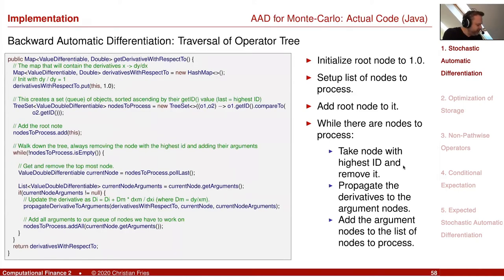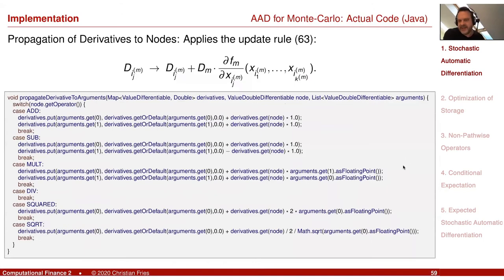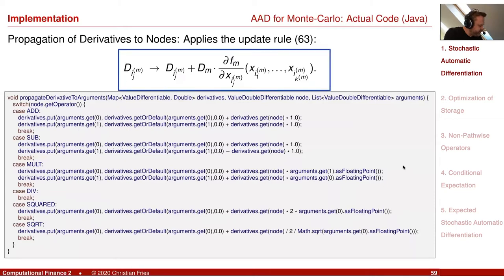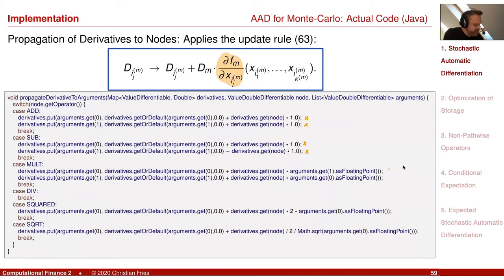We built the set quite efficiently by just adding the root node and then adding all the arguments of the functions, so the tree was built up and traversed with this algorithm. The only ingredient is the update rule: we need to apply this update rule for every function and every argument, computing the partial derivative. So we need to implement this rule for any function that can be applied.